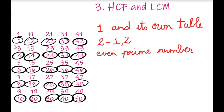Now we have understood that 2 is a prime number, so we will tick mark it. We got the first prime number from our list, that is 2. The other circled even numbers are surely not prime because they come in the 2 times table. Prime numbers should come only in 1's table and their own table, not any other table.